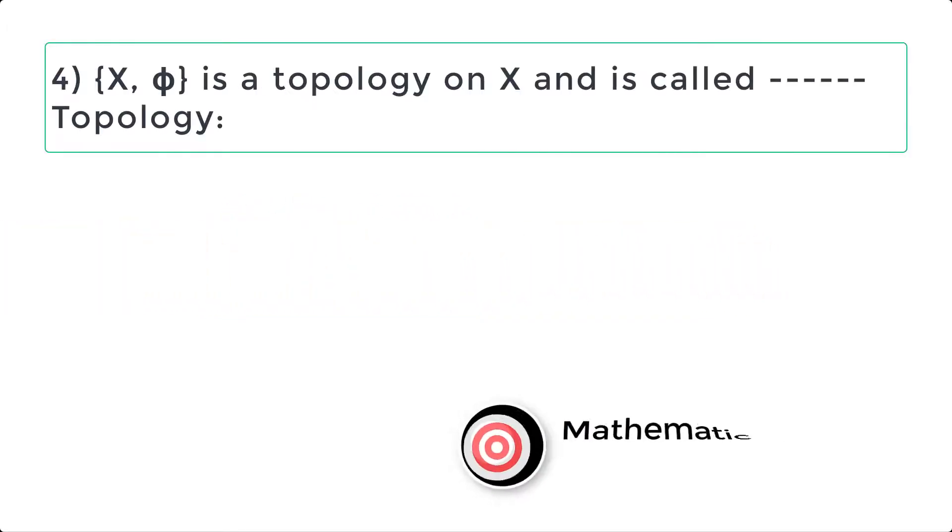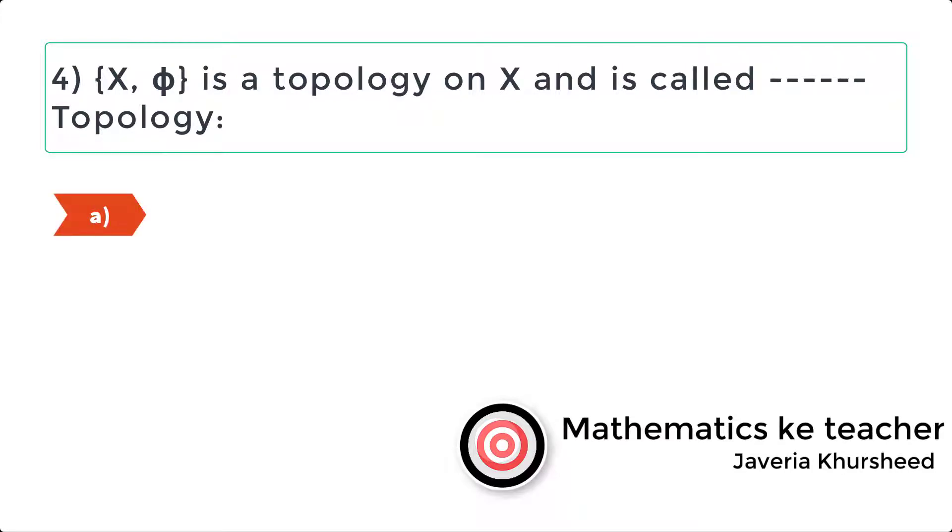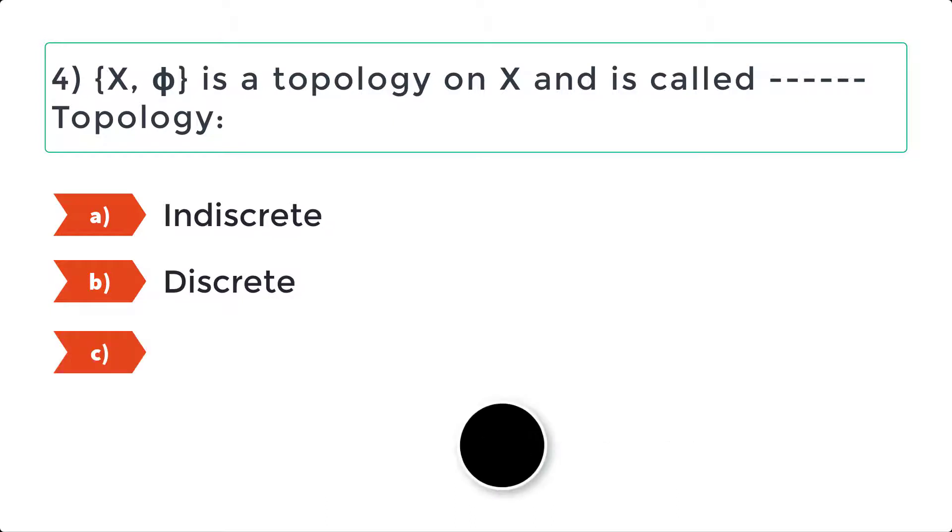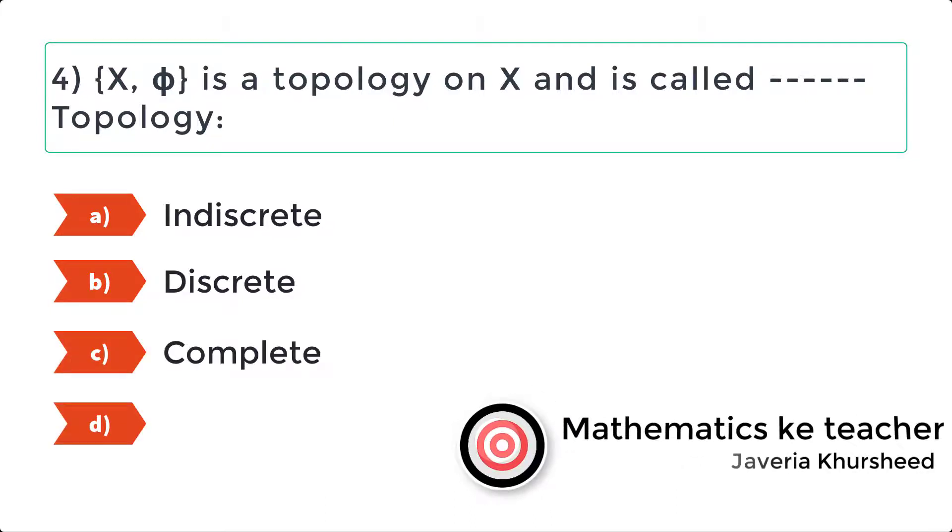Question 4: X, Phi is a topology on X and is called dashed topology. Options: A. Indiscrete, B. Discrete, C. Complete, D. None of these.